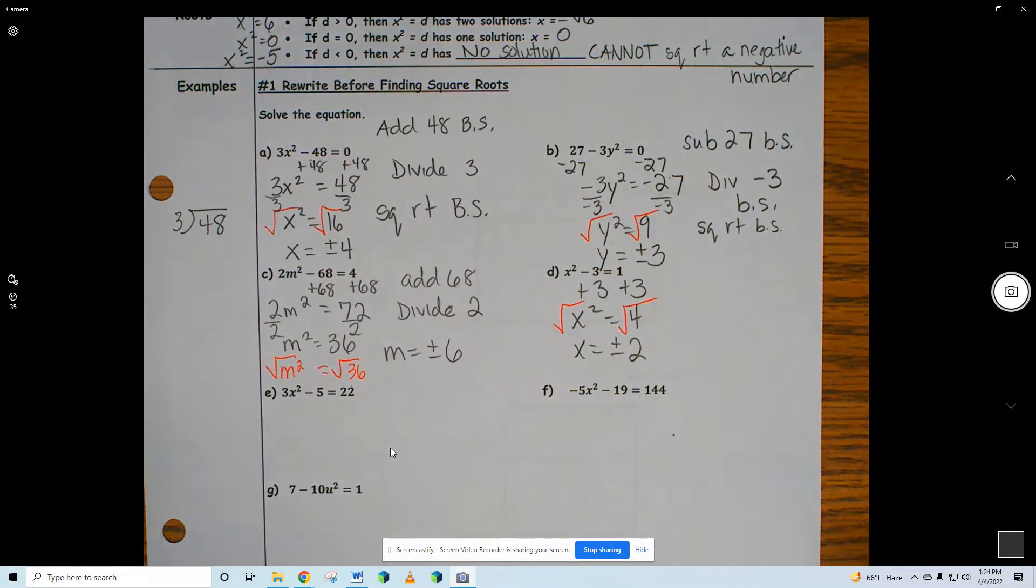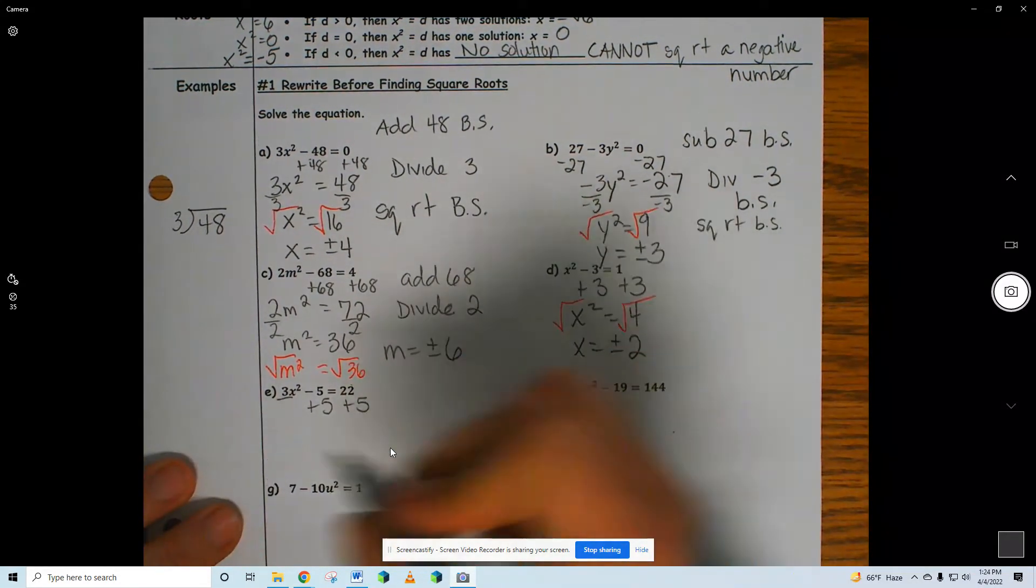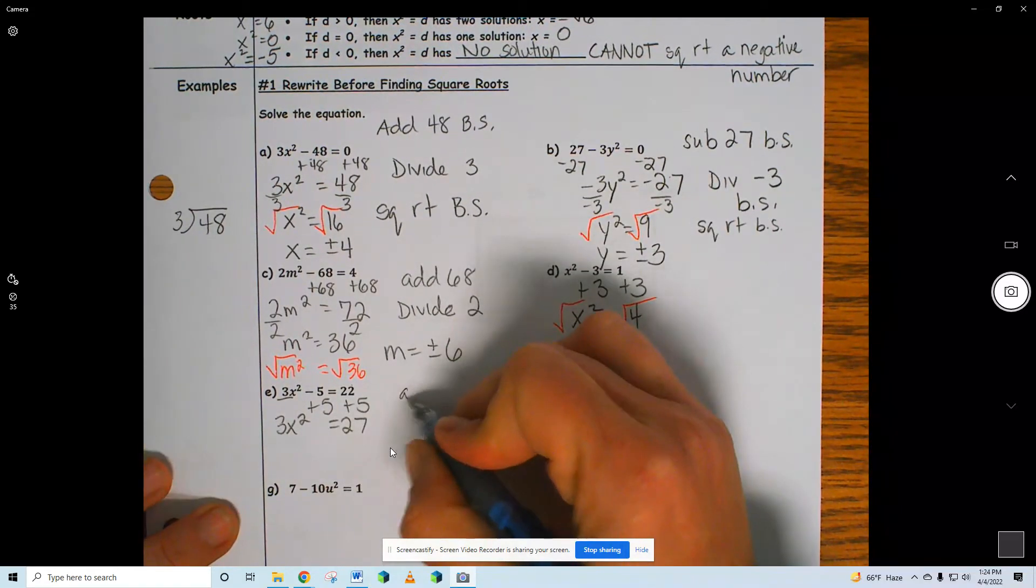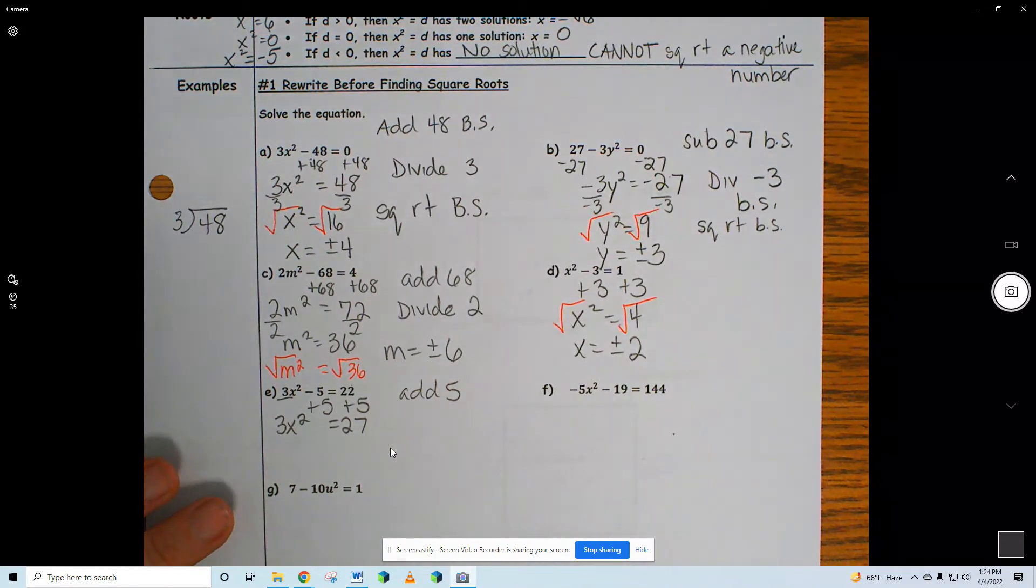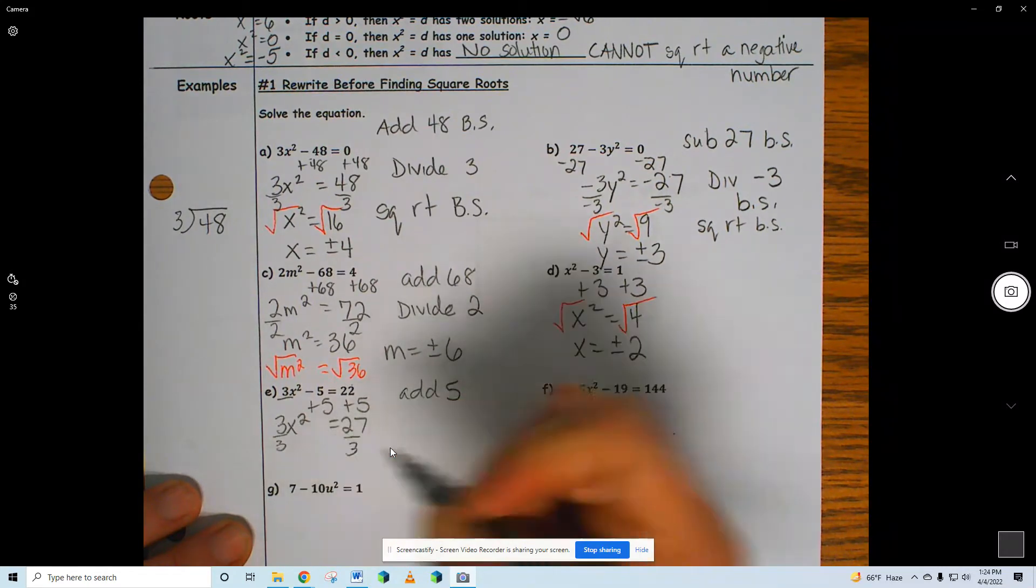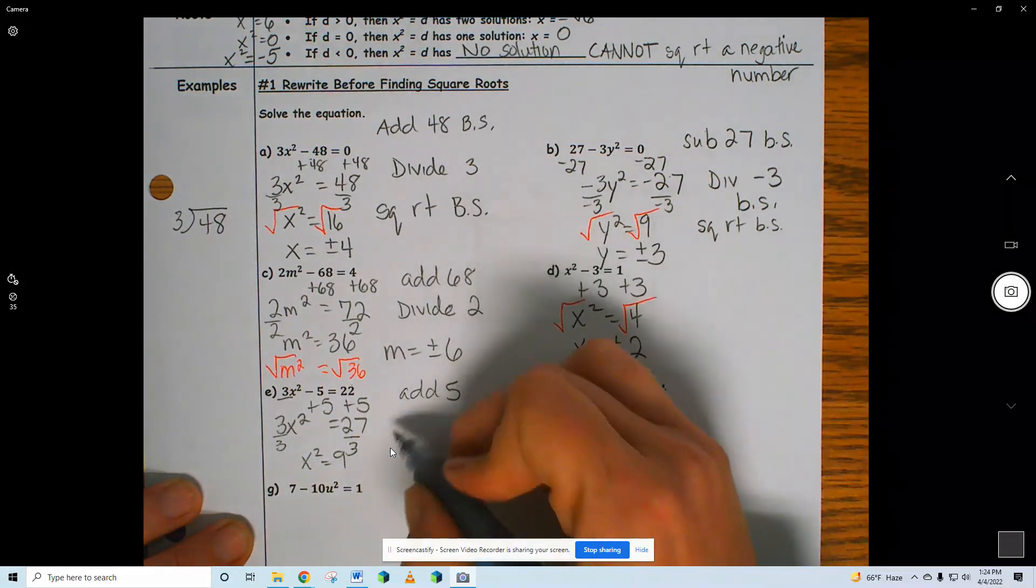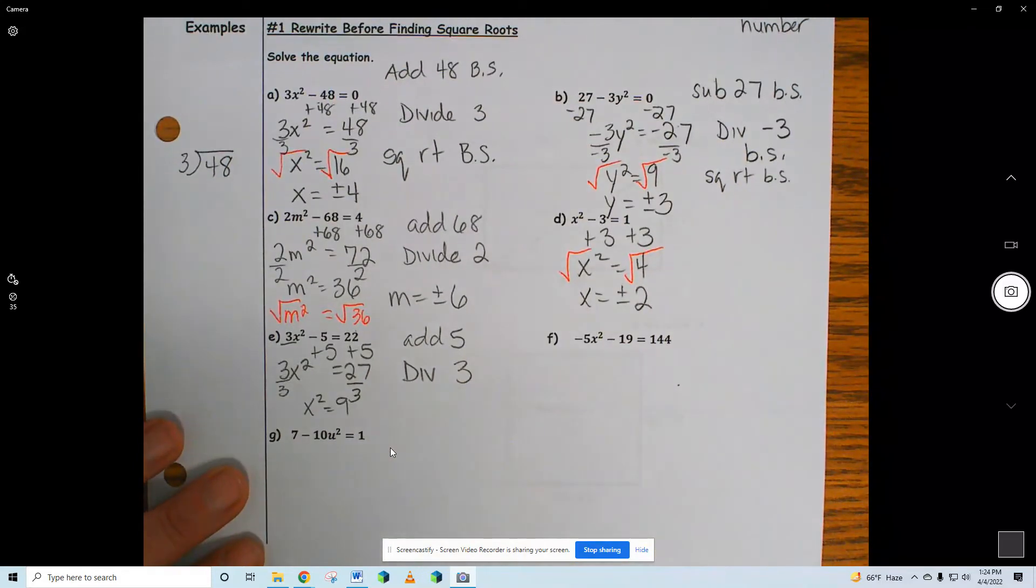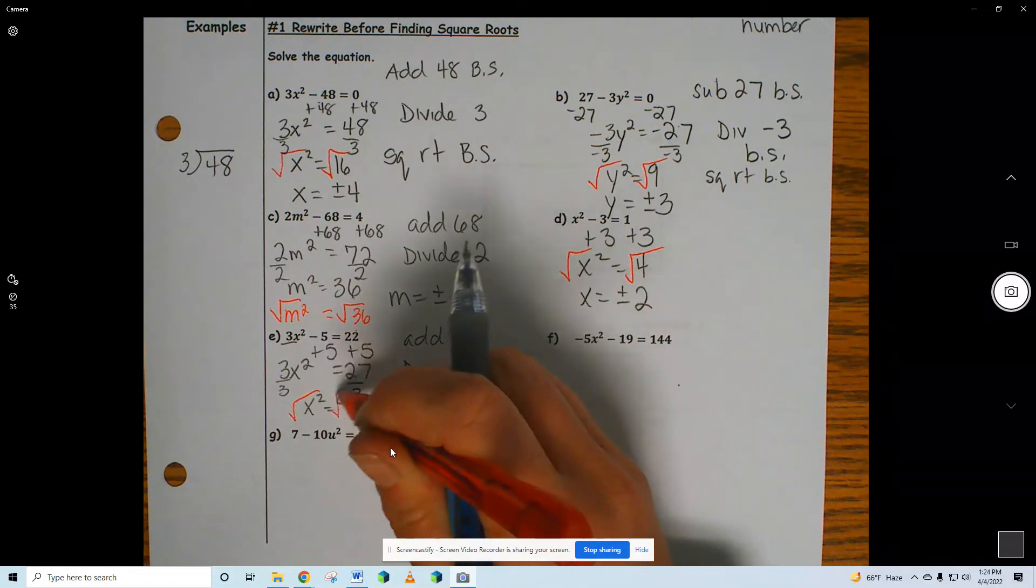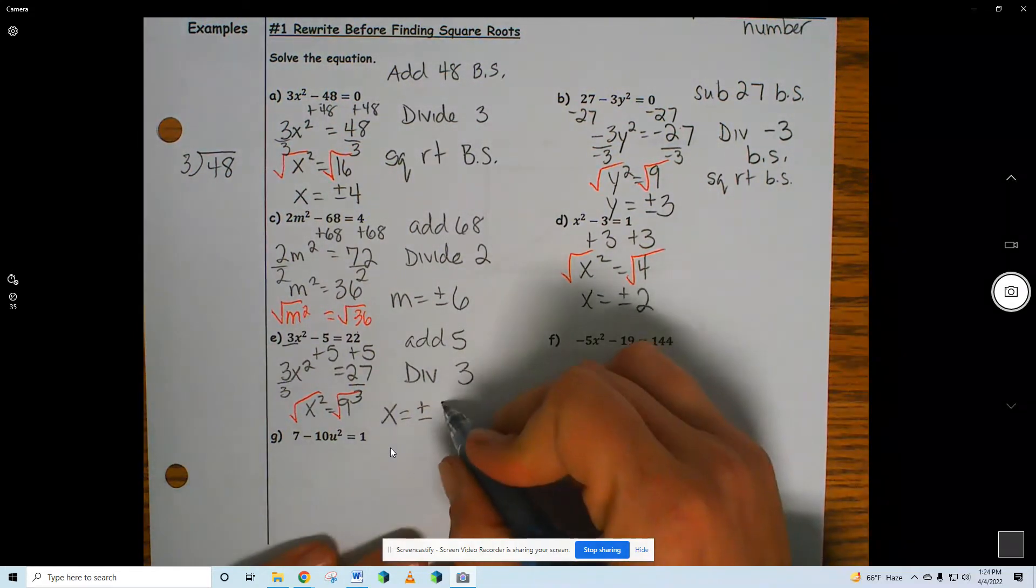Let's get through these last three. Add five both sides. Next, what's my task? I have 3x squared equals 27. Divide first, please. Divide by that three. You have to isolate the x squared first. Divide three both sides. x equals plus or minus, what's the square root of nine? Plus or minus three.